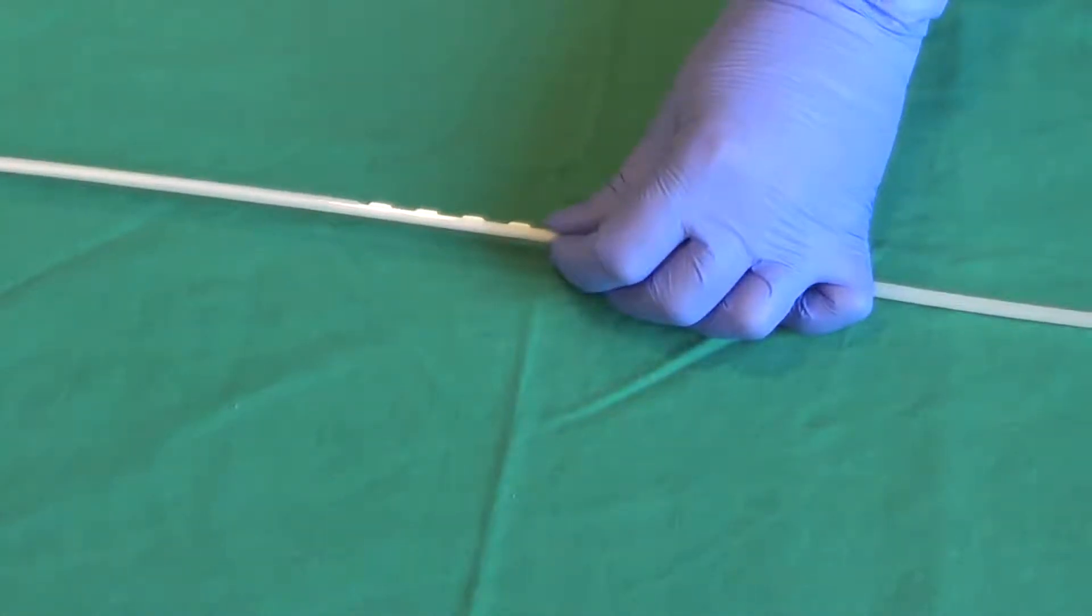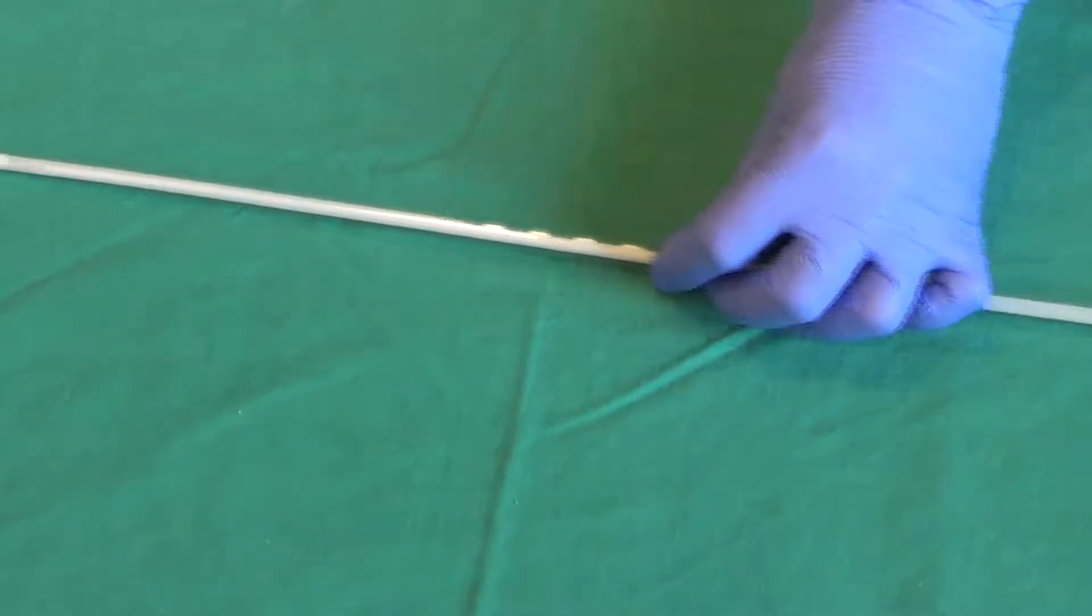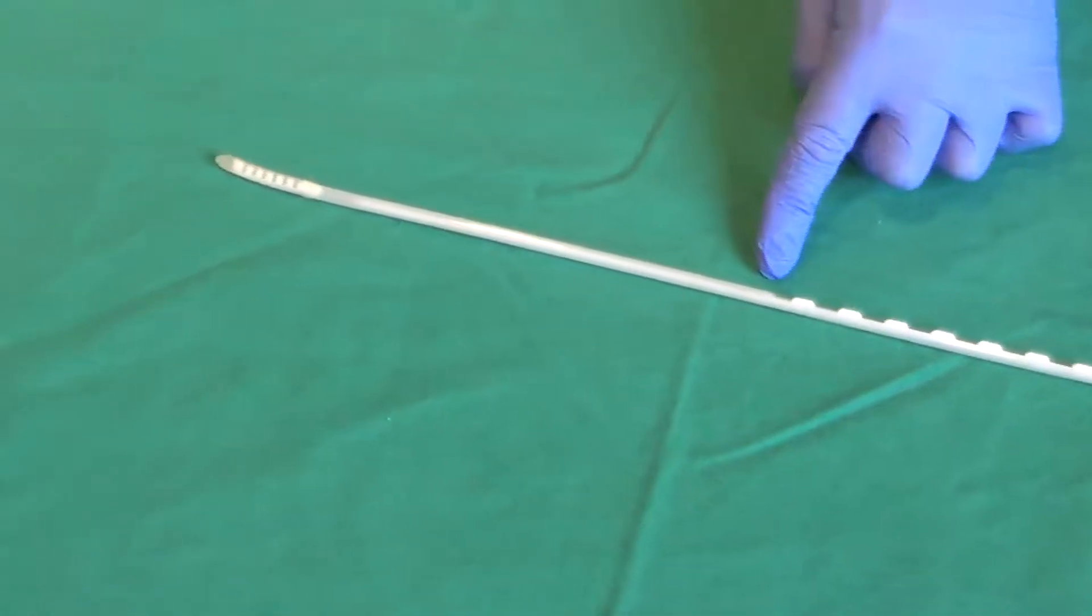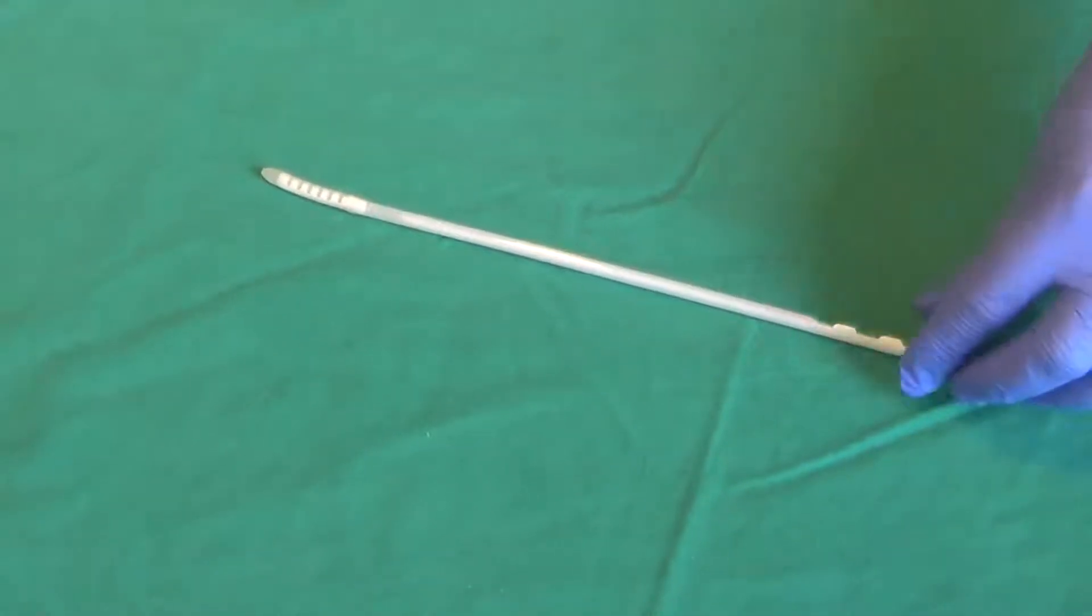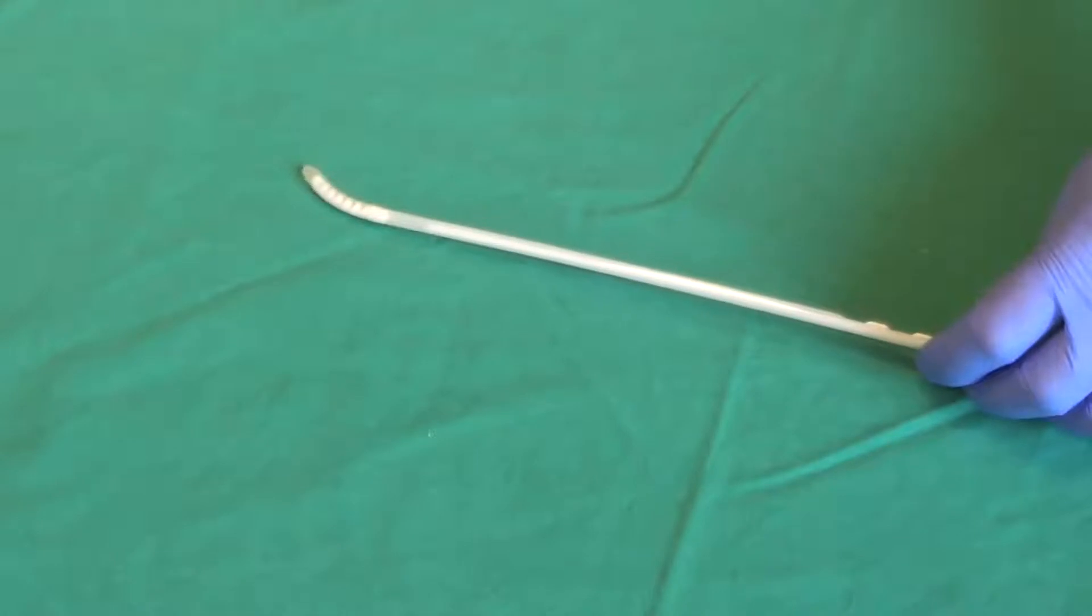It is positioned on the bougie so that it will not need to pass through the vocal cords. The blunt silicon tip minimizes the risk of tracheal trauma.